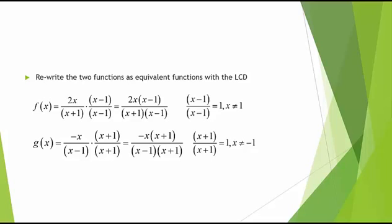When x equals 1, x minus 1 divided by x minus 1 is 0 over 0, which is of course undefined since it involves division by 0.